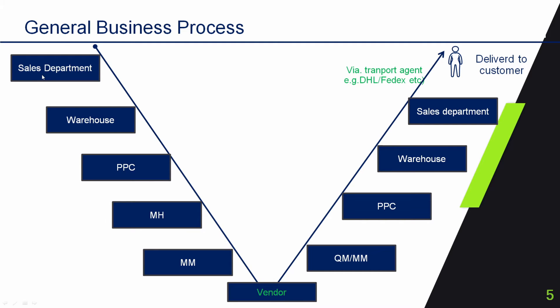The first step will be the sales department asking the warehouse whether the material is available or not. If the material is not available, the sales department will request the PPC — Production and Planning Control Department — to manufacture the material. The PPC department will request the Material Handling (MH) department for raw materials. If raw materials are not available, the Material Handling Department will issue a purchase order to the supplier or vendor. The vendor will supply raw material against the purchase order, and the inbound department of the warehouse will receive these items. The PPC department will then manufacture the material and send it to the warehouse.